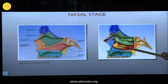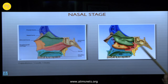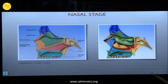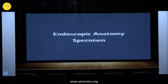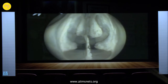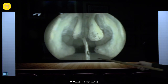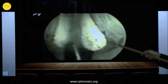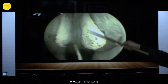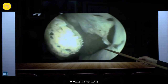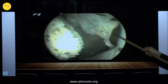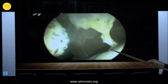The inferior turbinate is lateral to the nasal floor and not especially important for us. Lateral to the middle turbinate you can see the entrance to the maxillary sinus, which is important for more extended procedures. A video of a skull base specimen shows the angle between the septum and the nasal floor, the inferior and middle turbinates, and — lateral to the middle turbinate — the uncinate process and the entrance to the maxillary sinus.